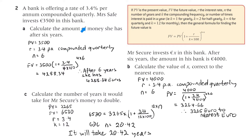R is 3.4, same bank. K is 12, same conditions. We put everything in there and solve for N using the graphic display calculator. We get N equals 20.42 — it will take 20.42 years. The book says 21, which is a bit inconsistent.